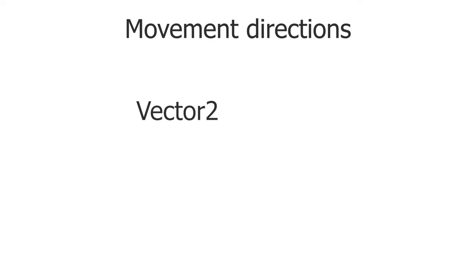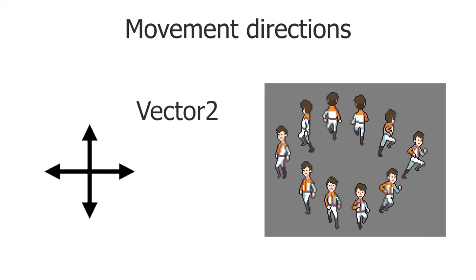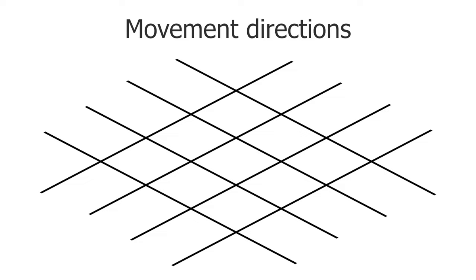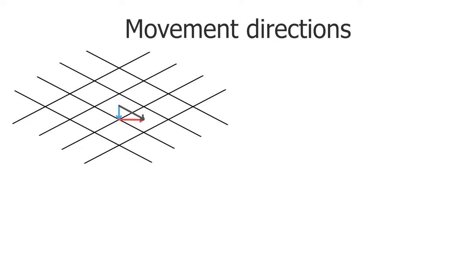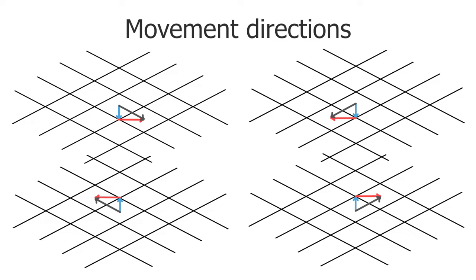Let's begin with establishing the movement directions. Vector2 has the necessary static fields for this: up, down, right, left. But these coordinates will move your object in top-down directions, and that's not what we want. Take an isometric grid with a 2-to-1 ratio — to move to another tile, you have to change both the x and y coordinates of an object's position. You have to move to half of the cell size on both sides. We can save this value in a vector which we will use as one step. When we want to move to a certain point — the next tile — we just add the current position of the object or subtract our offset. It is that simple. You can draw arrows in each direction and think about which coordinate increases and which decreases.